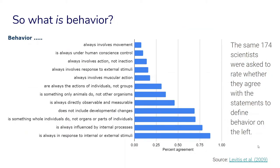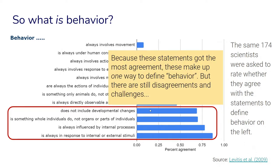The authors of this study also presented a range of statements to which scientists had to rate whether they agree with the statement to define behavior. Again, there was no real agreement about what attributes define behavior. The statements that got the most agreement provide one way to build a definition — for example, behavior does not include developmental changes such as puberty or getting gray hair, and it is something that whole individuals do, not organs or parts of individuals like the heartbeat. But there are still disagreements and challenges.